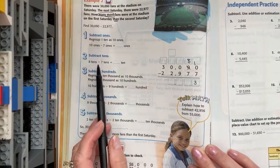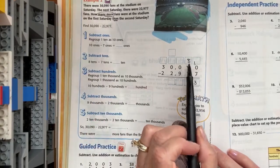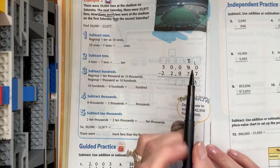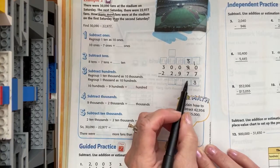So, now we move to the tens column. Eight minus seven. If we have eight tens minus seven tens, that leaves us with one ten left over.